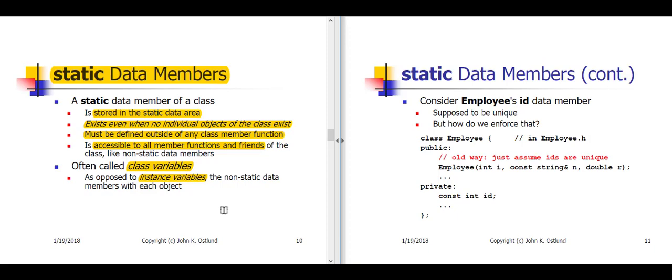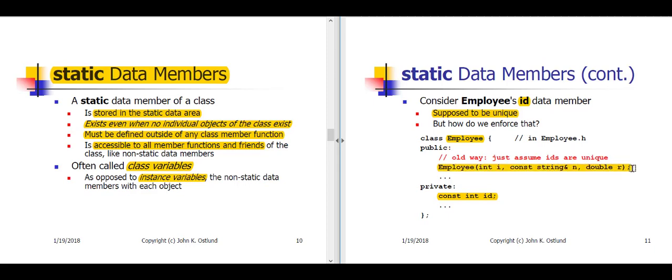Let's take a look at this in the context of the employee class we've been working with in previous lectures. Shown here on slide 11, we have our employee class with a const data member ID — each employee object has its own ID within it. Supposedly, these ID numbers should be unique for the different employee objects in our program. But we don't have any way of enforcing that currently, because our constructor takes the employee ID number as the first argument, relying on the application code to provide a unique ID number for each employee object that gets created.